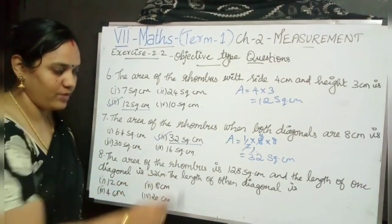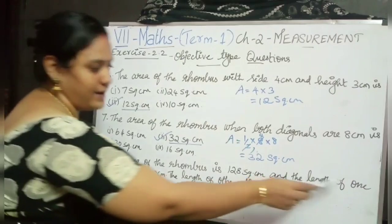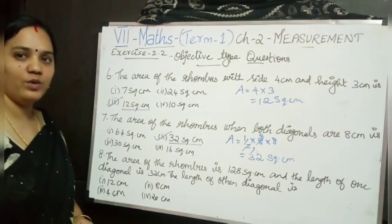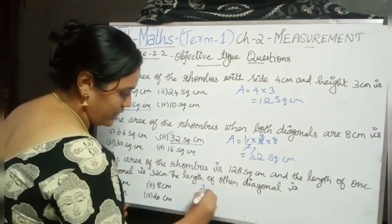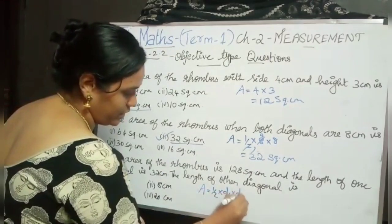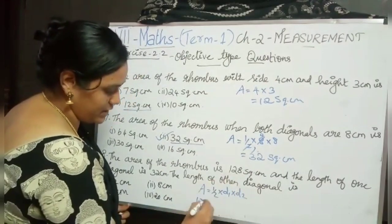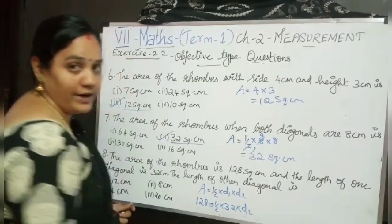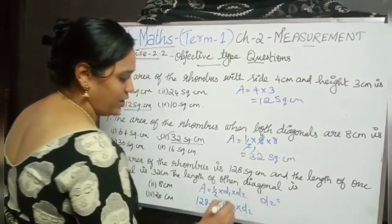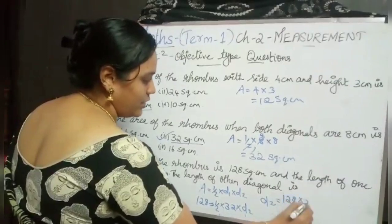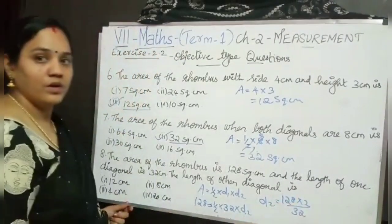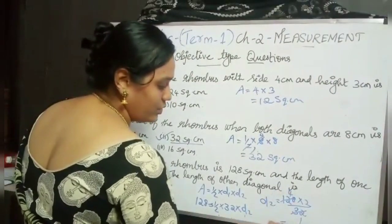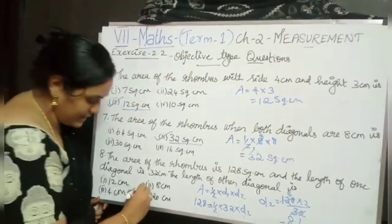The 8th problem: the area of the rhombus is 128 square centimetre and the length of one diagonal is 32 centimetre. Find the length of the other diagonal. Area equals half into D1 into D2: 128 equals half into 32 into D2. Taking numbers to the other side: D2 equals 128 into 2 divided by 32. Since 4 32s are 128, we get 4 into 2 equals 8. So my answer is 8 centimetre.